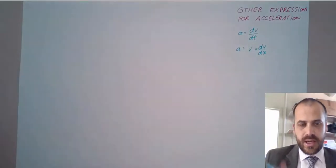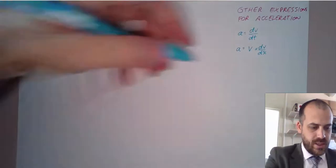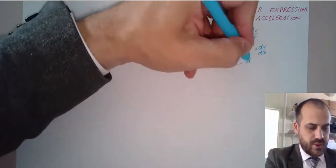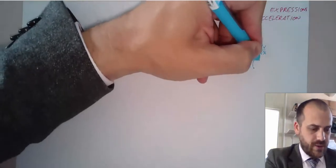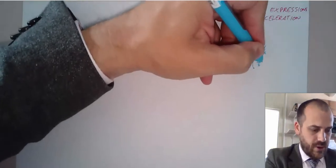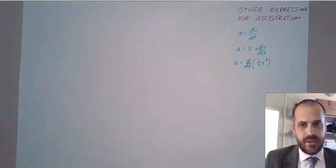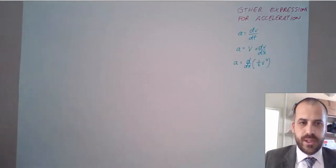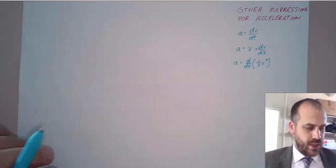And another one — it feels a little bit complicated — acceleration is equal to the derivative of half of velocity squared. You might be asking yourself where do these formulas come from. I will get to that in the end, but I want to show you why we would use them first of all.